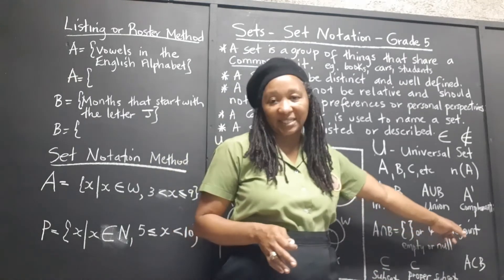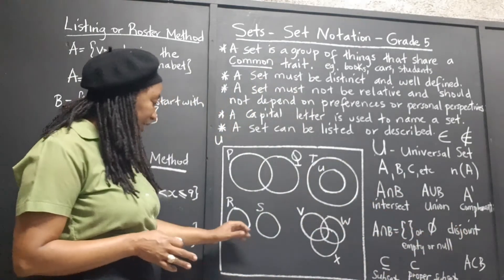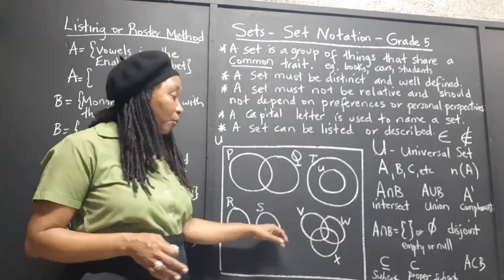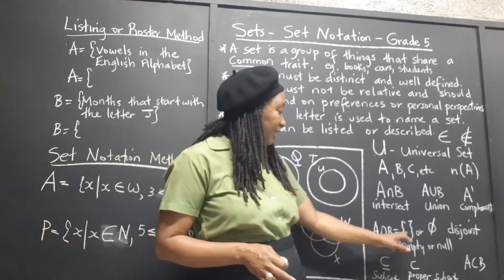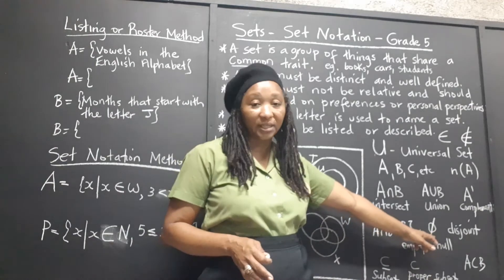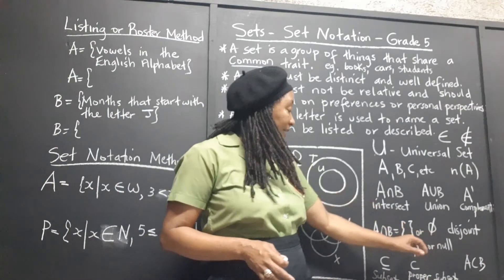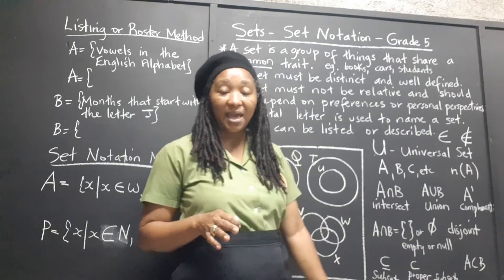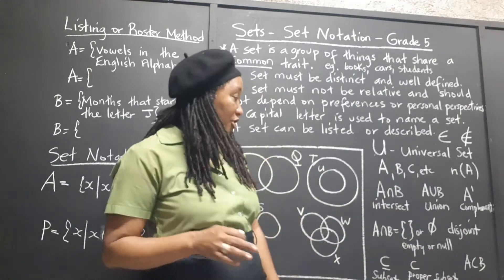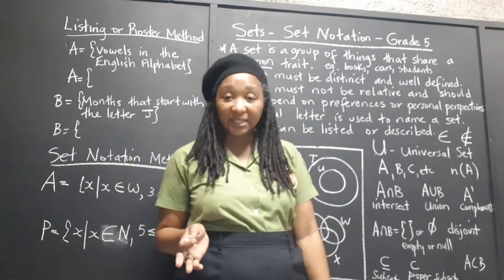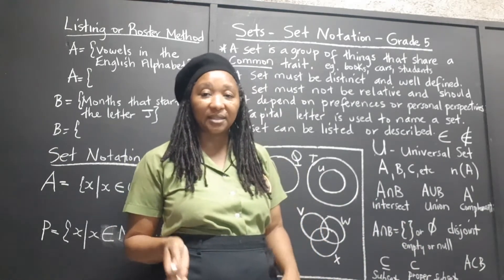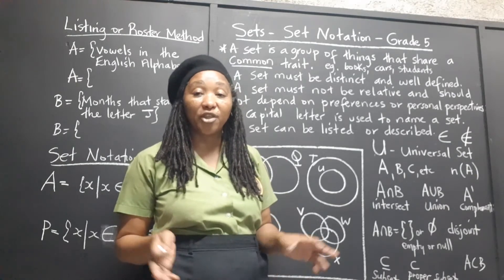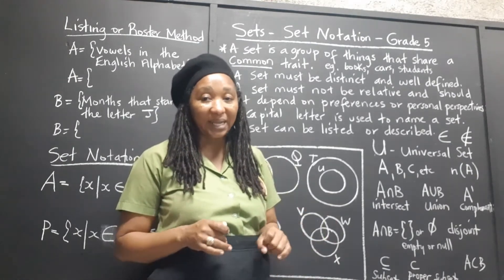If two sets are disjoint — for example, these two — they do not overlap. We say that their intersection is the empty set or the null set, and these two symbols are used to represent the empty or null set. If the sets are disjoint, then their intersection is the empty set. However, their union can still be listed.